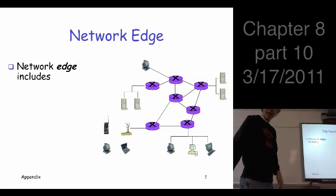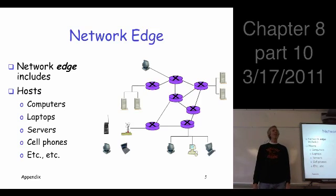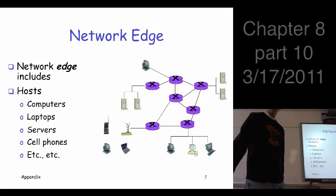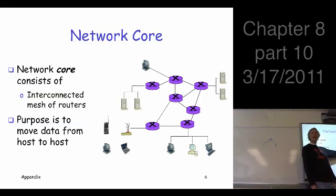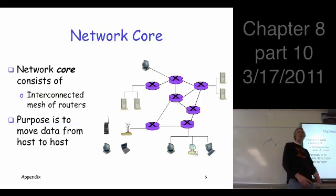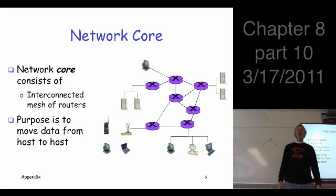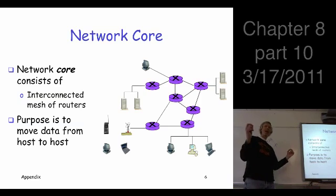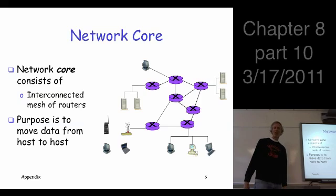What about the core? The core is this interconnected mesh of routers. What's the purpose of the core? Well, it keeps Cisco in business — but really, the point is that it's a way to get packets from point A to point B. You'd just assume this whole core of the network was invisible. You don't have to worry about it at all, but it gets your packets from one point to another.